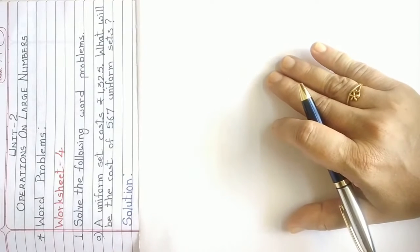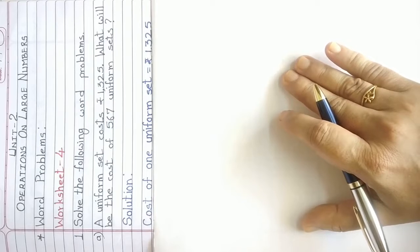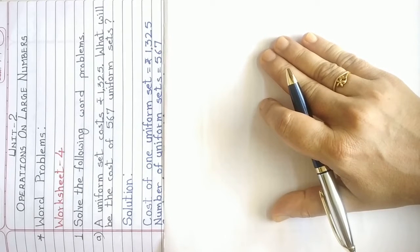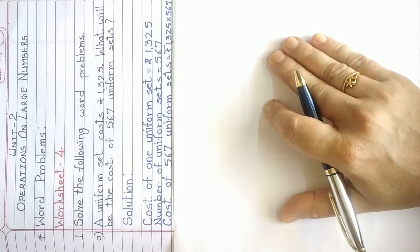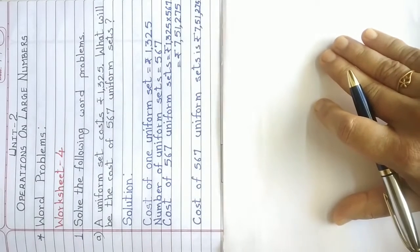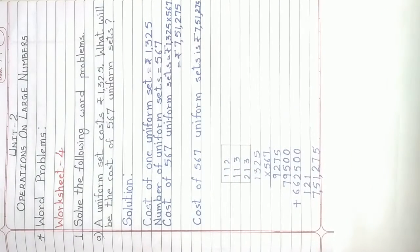So write down the solution. The first statement is: cost of one uniform set is equal to Rs. 1,325. The second statement is: number of uniform sets is equal to 567. And the third statement is: cost of 567 uniform sets is equal to Rs. 1,325 multiplied by 567, which equals Rs. 1,55,275.